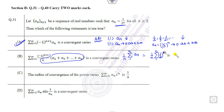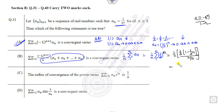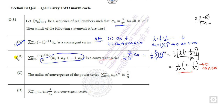This is a GP series. I can substitute: A times (1 - R^N) / (1 - R), giving 1/3^N over (1 - R), where 1 - R equals 2/3. So the answer is 1/(2N) times (1 - 1/3^N). This value clearly goes to 0 as N approaches infinity, and it is also a decreasing sequence, meaning this series is also convergent.